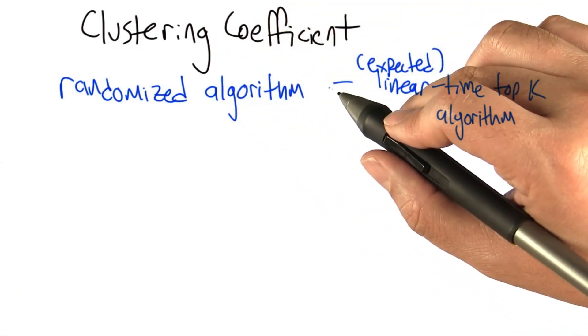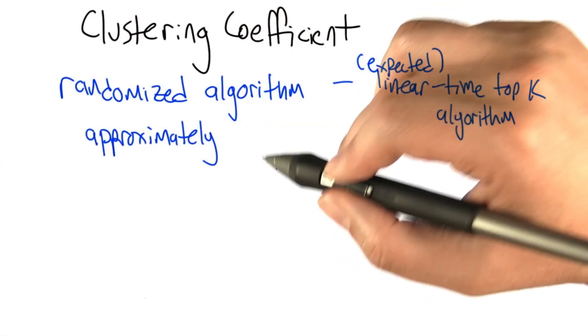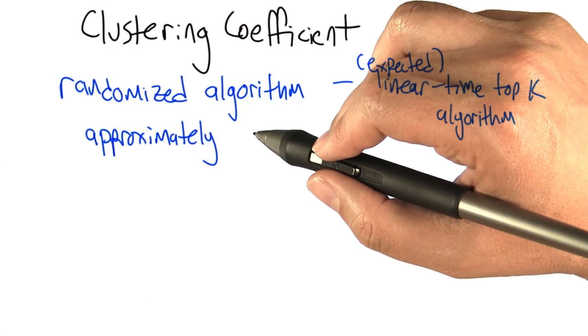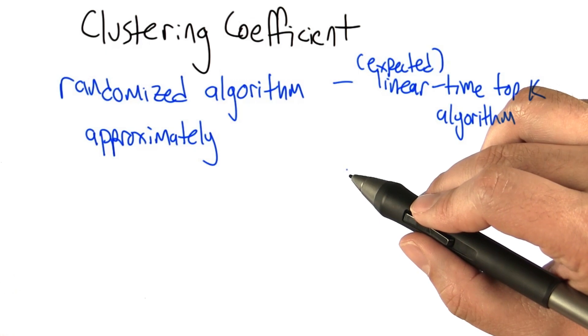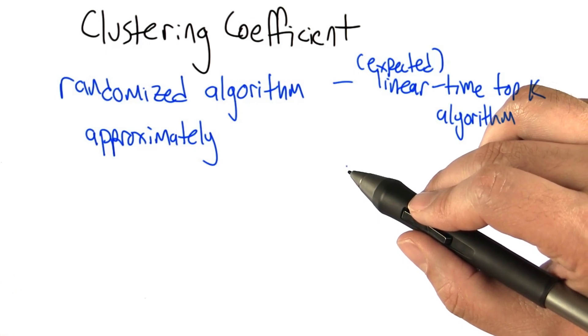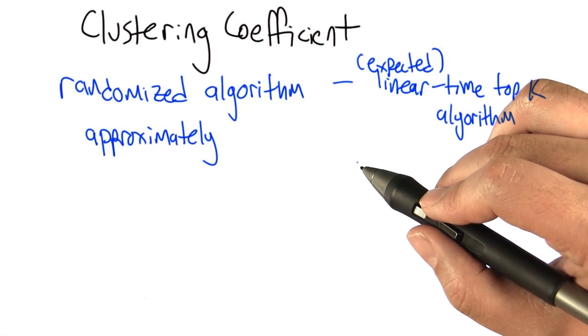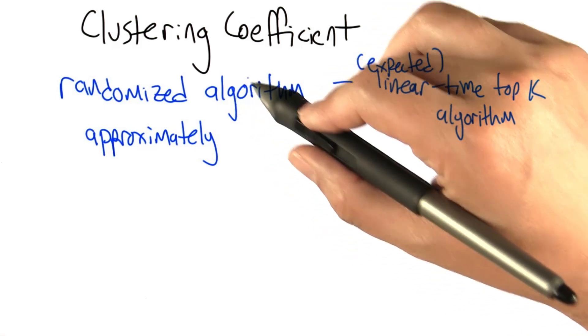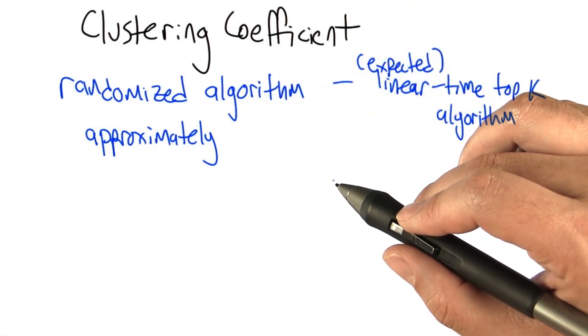We're going to now look at computing the clustering coefficient approximately. This is really useful if the exact answer doesn't matter very much, which often when you're doing social network analysis it doesn't matter exactly what something like the clustering coefficient is. You want to just get the ballpark, whether it's heavily clustered or loosely clustered. Just getting it correct to a couple digits is probably sufficient, but getting the exact answer is actually pretty expensive.